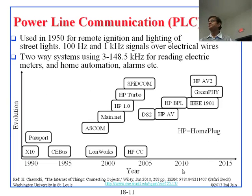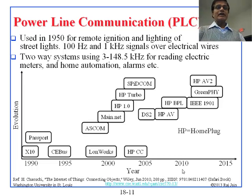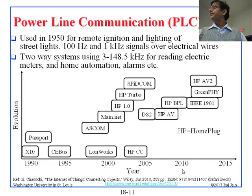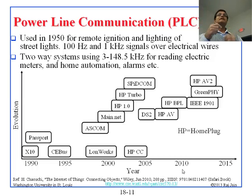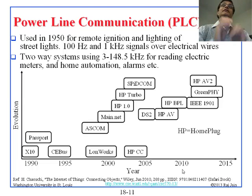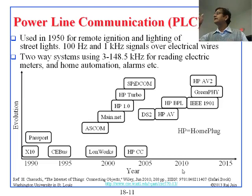Power line communication has been going on for a long time. In the 1800s, someone discovered that signals can be sent over electrical wires while sending electrical power. That didn't really happen much until 1950, when they started using it for street lighting — you have lighting and want to control it remotely. The lighting means electric power is going through it, so they said why don't we send a bit over the wire to turn it on and a bit to turn it off.